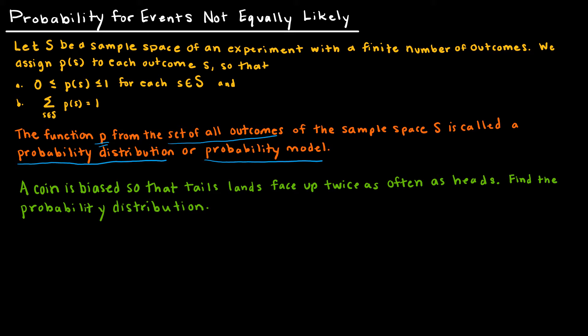Let's look at our first example together. A coin is biased so that tails lands face up twice as often as heads. Find the probability distribution. This might be very straightforward, but let's just look at one together. We're saying the probability of tails equals 2 times the probability of heads, because tails lands up twice as often as heads.